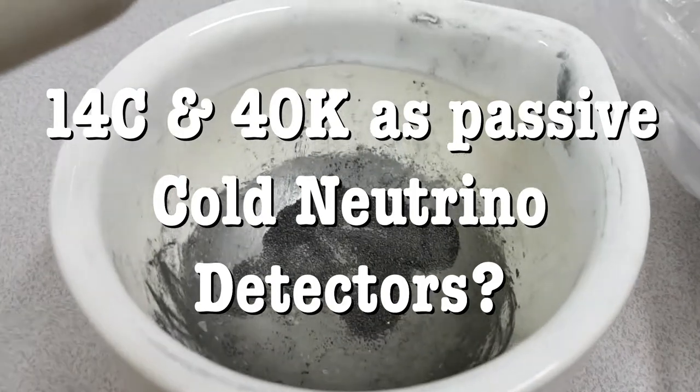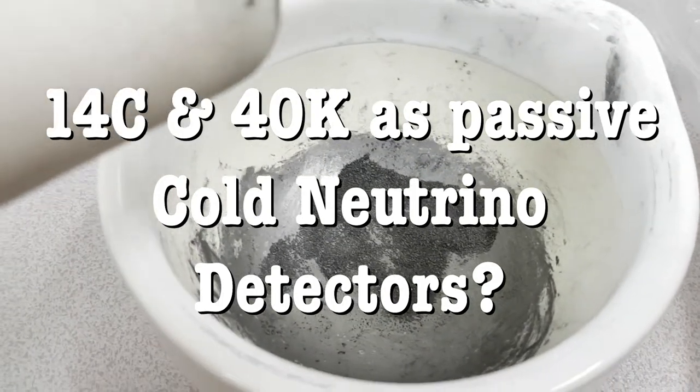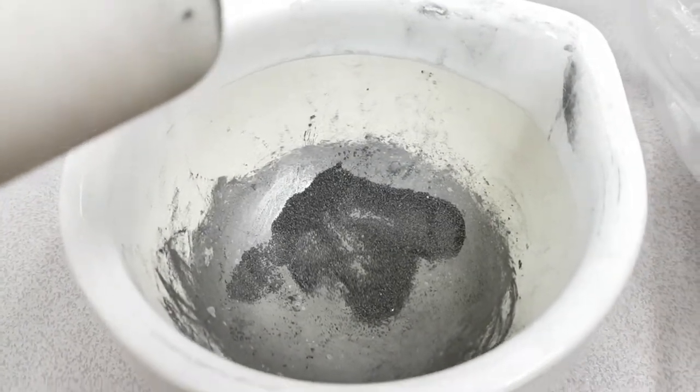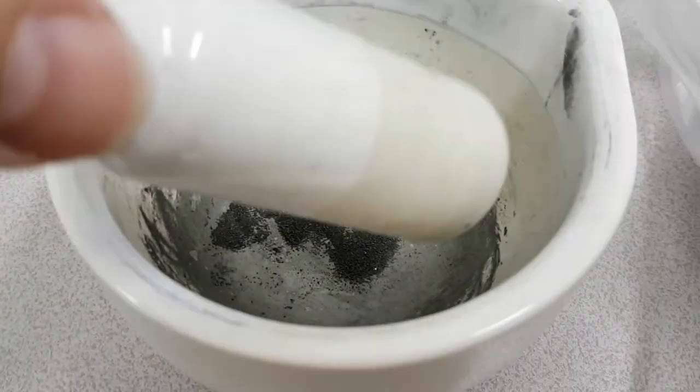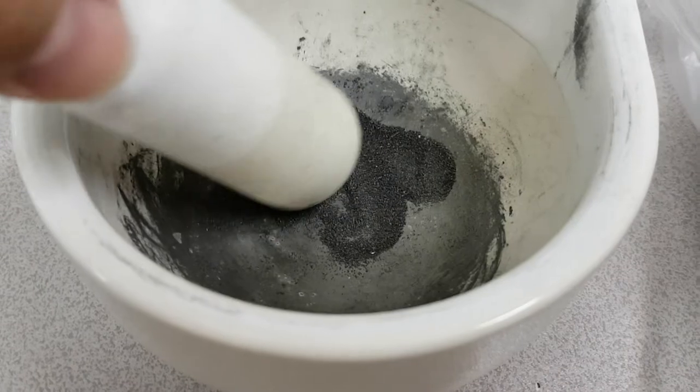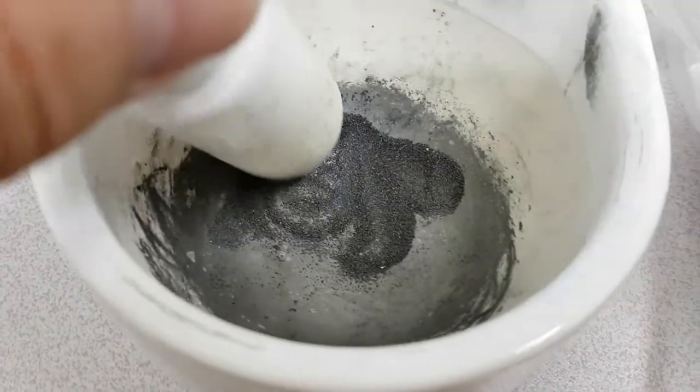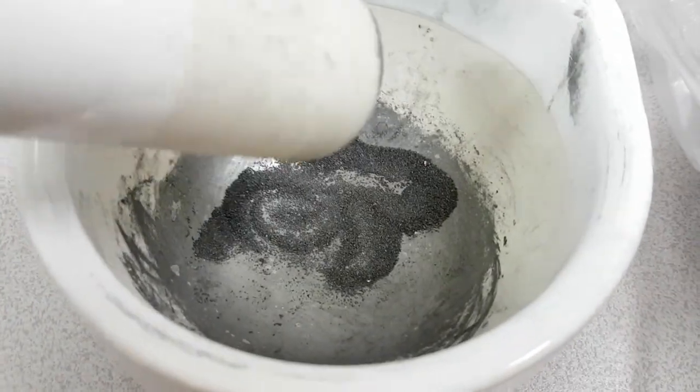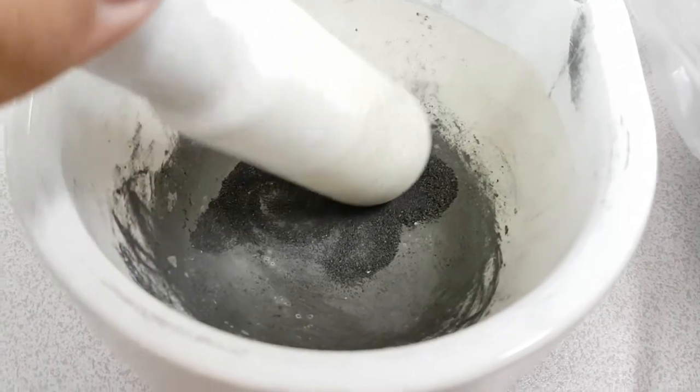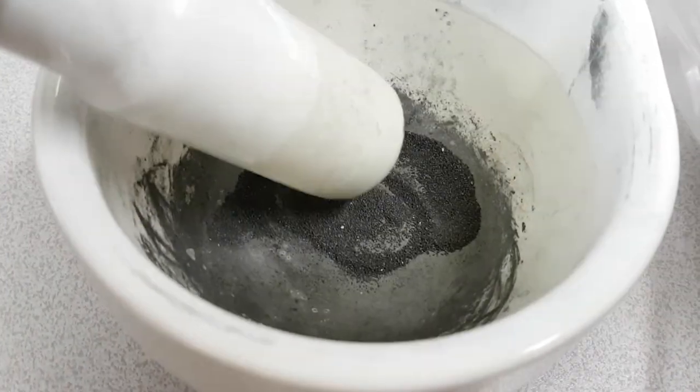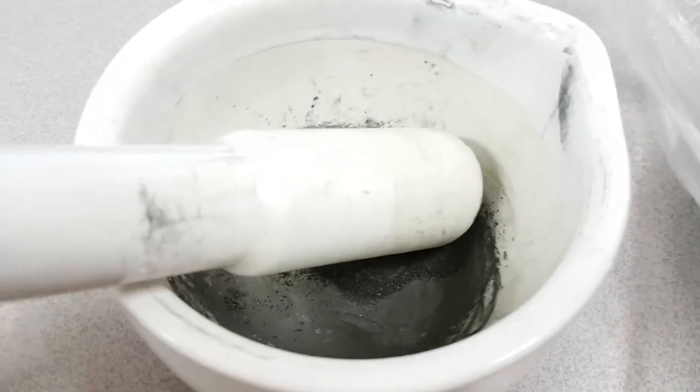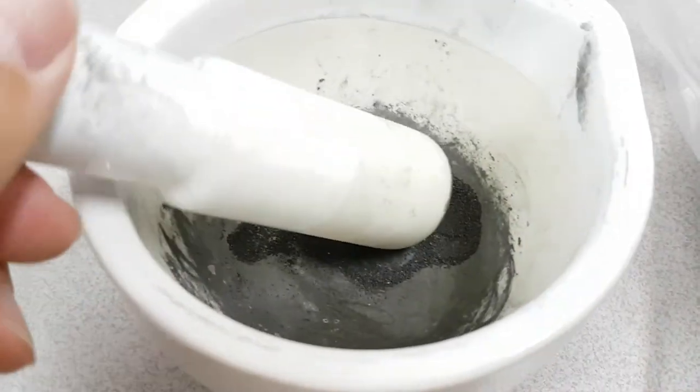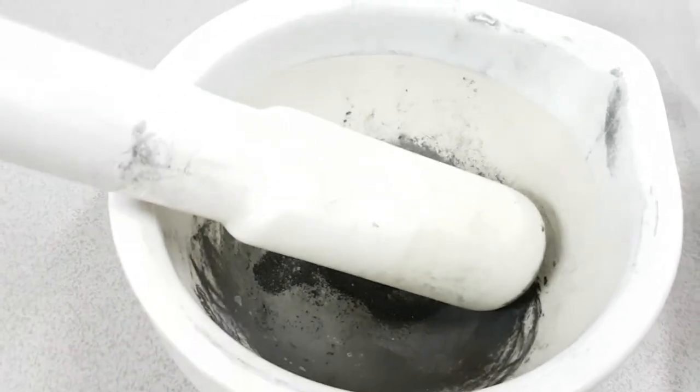So here is the pestle and mortar that we used for the previous tests for the NOVA reactor. There's still some residual ground-up spectrographic graphite in here. Now this is extremely pure carbon from graphite, and we didn't see anything with this, and that's, in my opinion, not a surprise.